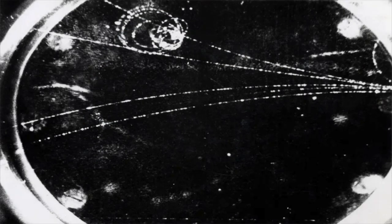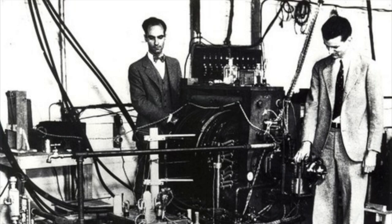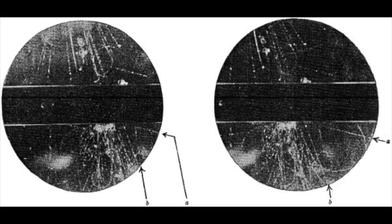Cloud chambers were instrumental in the discovery of a whole host of new subatomic particles, such as the positron in 1932, and the muon in 1936 by Carl Anderson and Seth Neddermeyer, and the kaon in 1947 by George Rochester and Clifford Butler. This rapid-fire discovery of so many new types of particles caused something of a stir in particle physics, because it quickly became clear that all these particles couldn't possibly fit into a neat standard model.